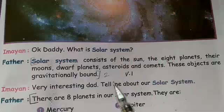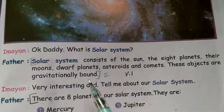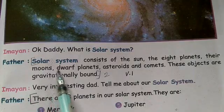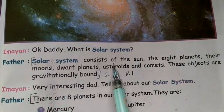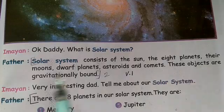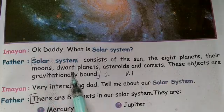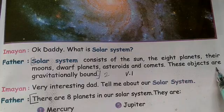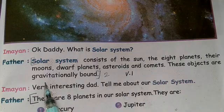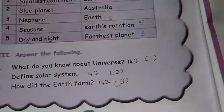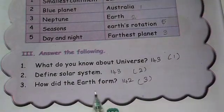Next, define solar system - same page 143, second one. Students, listen and write it down. The solar system consists of the Sun, the eight planets, their moons, dwarf planets, asteroids, and comets. These objects are gravitationally bound in the solar system.